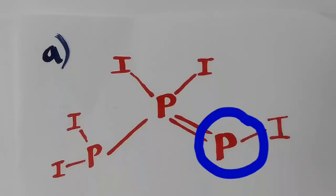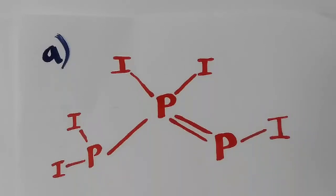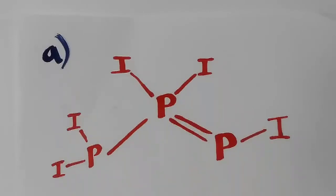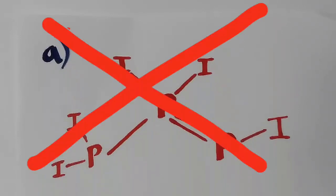This phosphorus is attached to one iodine only. Therefore, all three phosphorus are different, which will give three signals and becomes the wrong option.